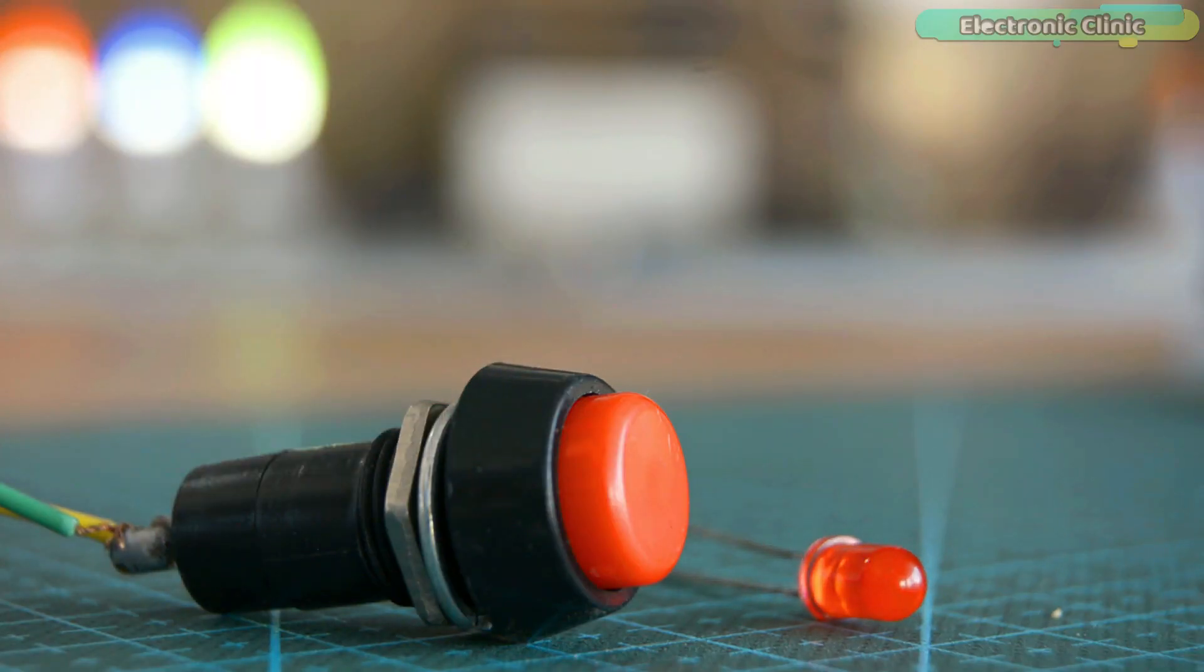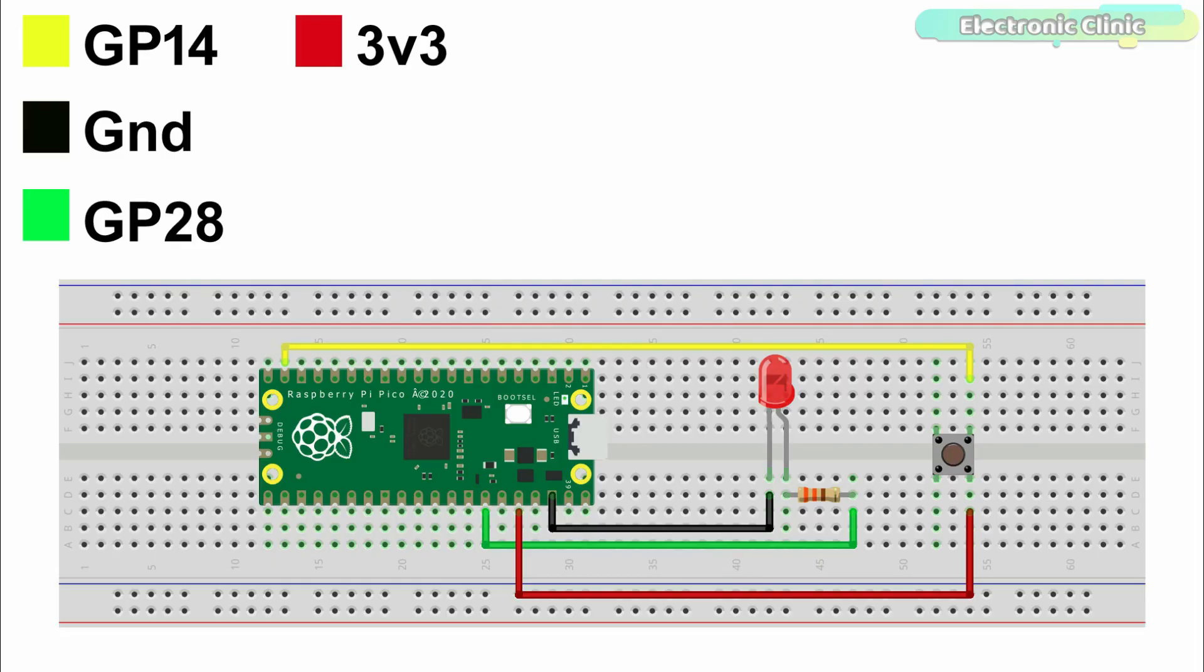Let's go ahead and take a look at the circuit diagram. One side of the push button is connected with 3.3V pin of the Raspberry Pi Pico, while the other side of the push button is connected with GP14 pin of the Pico board. The LED connection with the Pico board remains exactly the same.